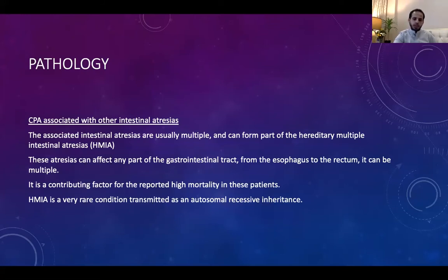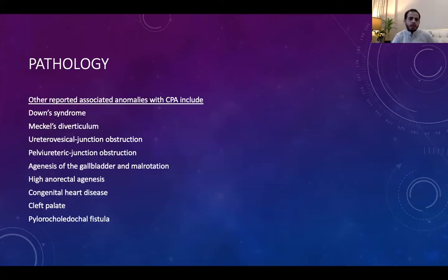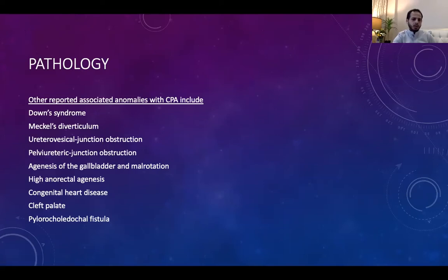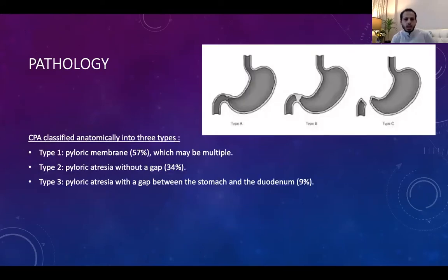Other congenital anomalies reported in association with pyloric atresia include Down syndrome, Meckel's diverticulum, urological abnormalities, gallbladder abnormalities, anorectal malformations, and cleft palate. Anatomically, pyloric atresia is classified into three types: Type 1 — membrane only (most common, 57%), though be aware it can be multiple membranes; Type 2 — pyloric atresia without gap, sometimes connected by a cord; and Type 3 — pyloric atresia with a gap between the stomach and duodenum (least common).